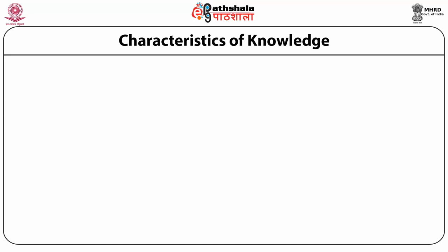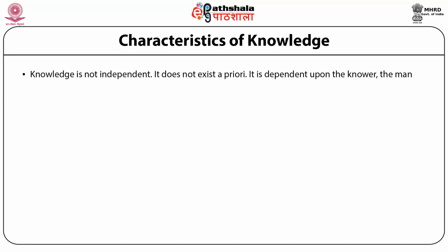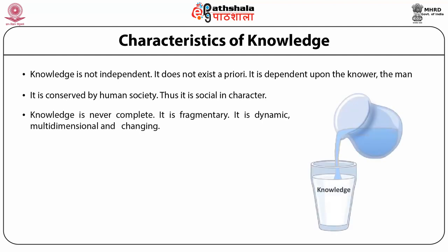Characteristics of knowledge — that is its nature and properties. Knowledge is not independent; it doesn't exist a priori. It is dependent upon the knower, the human being. It is conserved by human society, thus it is socially constructed. Knowledge is never complete, always dynamic, always moving, because it is fragmented. It is multidimensional and always changing as it grows. Thus, it is inexhaustible — that is, never ending. It will go on as long as society is there; in other words, it is infinite.